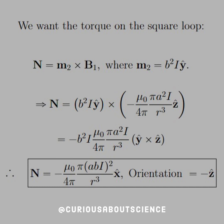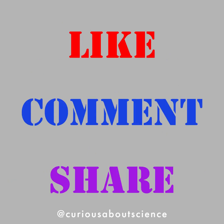If we have a torque acting on something, that means it's going to rotate — the same way that in the linear case, if I have a force on something, it's going to accelerate. That's why we end up in that equilibrium orientation. Good stuff, and we'll see you next time.